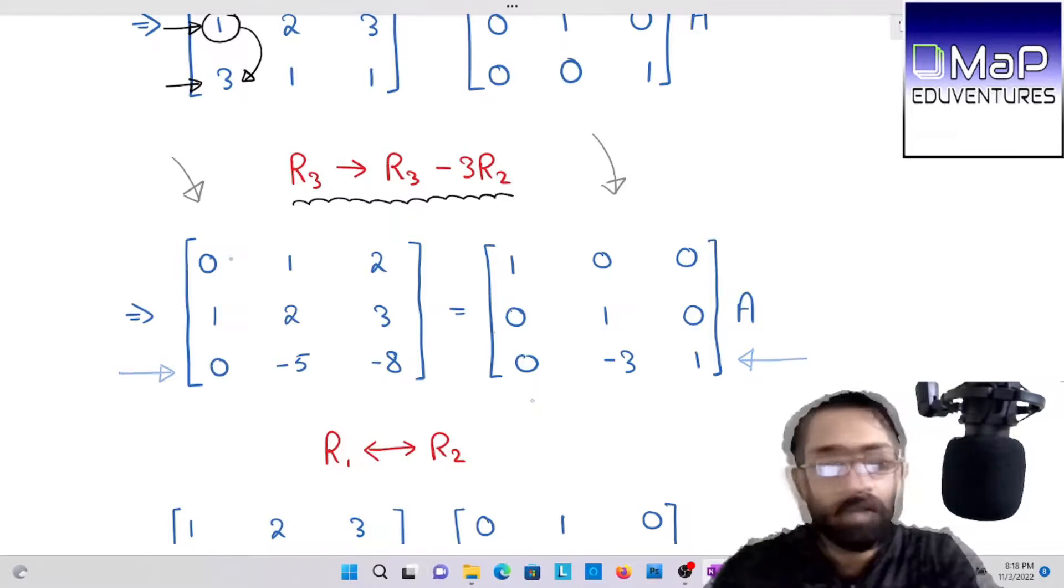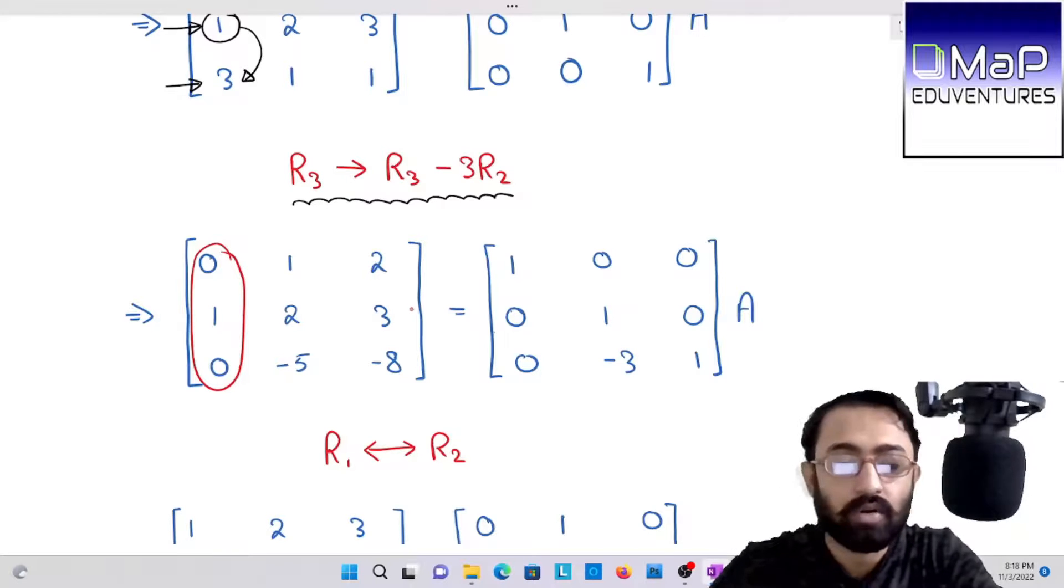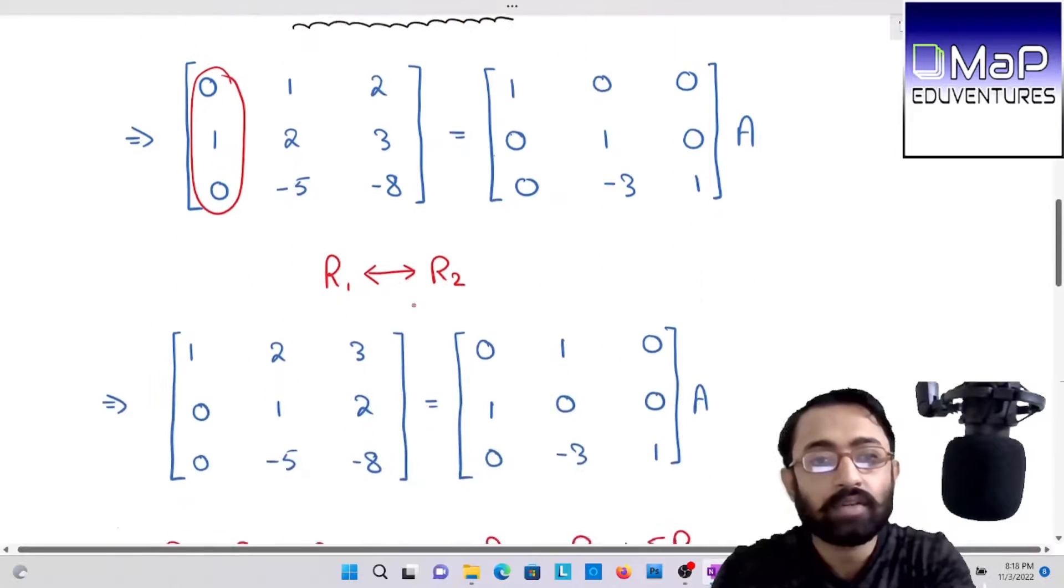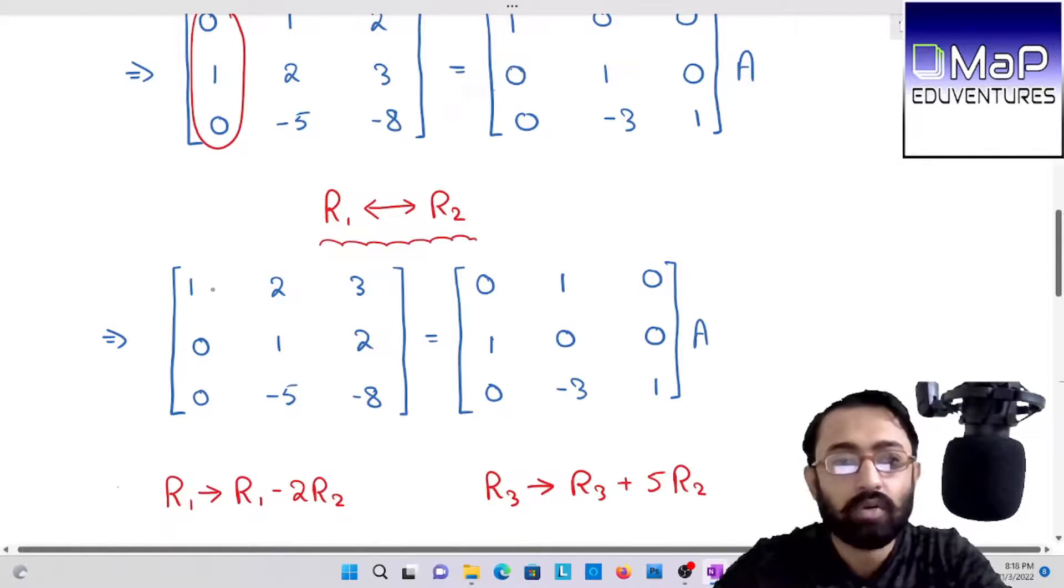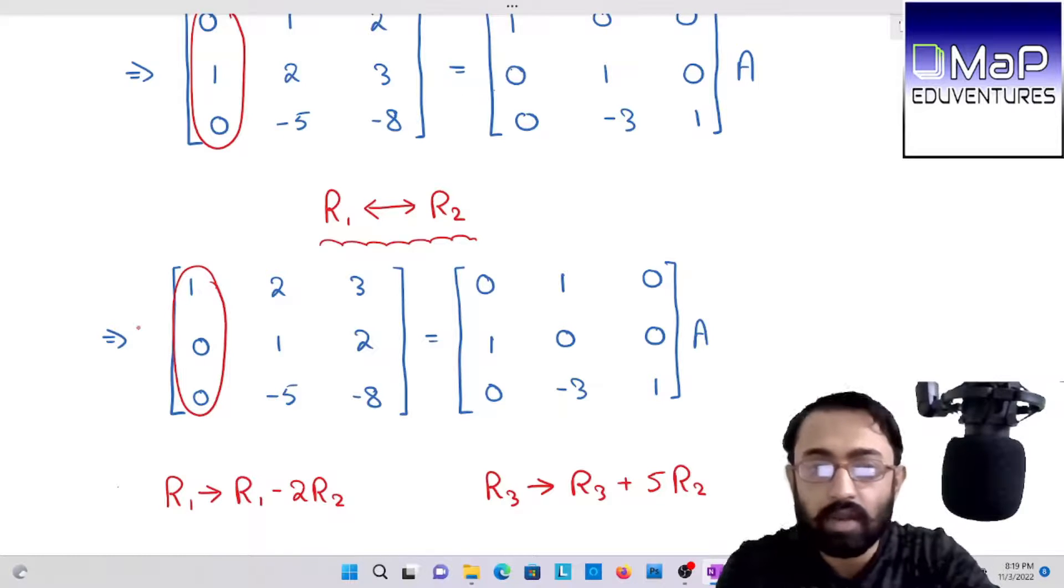In the third row, in both sides, we have zero, minus five, minus eight and zero, minus three, one. Now the first column, to make it identity matrix, I need zero, one and zero. Just you have to arrange now. One should be in first row, so R1 and R2 I will interchange. Now it's exactly identity matrix.